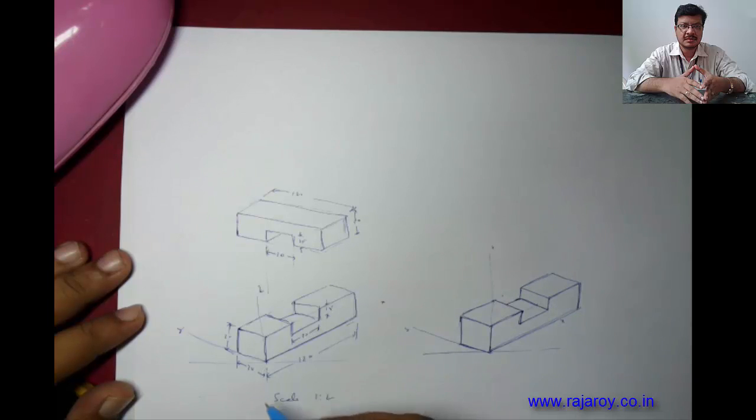Now how to draw the extension lines. Extension lines should not touch the object, so give it 1mm gap. Minimum length of this is 10mm. 1mm gap and draw a 10mm line. Then draw a line parallel to this x-axis. Leave some gap here.